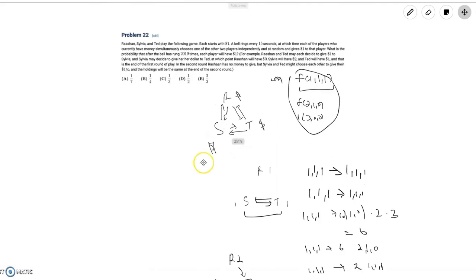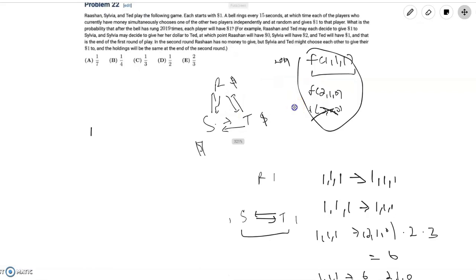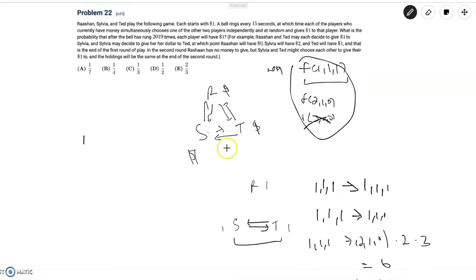So basically the problem, at round zero, the probability that each player has one dollar is equal to one. And since we don't worry about three, zero, zero, the probability that we have one player with two dollars, one player with one dollar, and one player with zero dollars is zero since everyone starts with one.